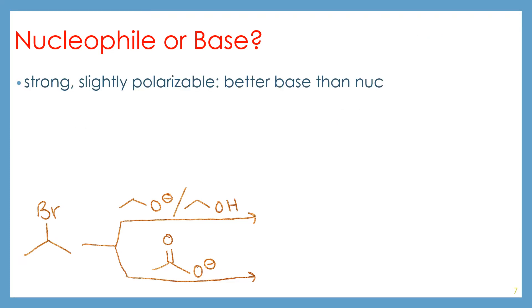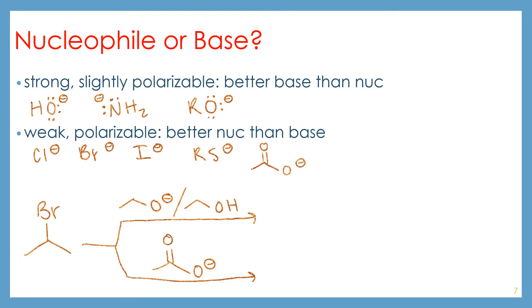So let's talk about the difference between nucleophiles and bases. If something is strong and slightly polarizable, it's going to be a better base than a nucleophile. So for example, hydroxide, azonide, or alkoxides. If it's weak and polarizable, it's going to act as a better nucleophile than base. So this includes your halogens, this includes alkyl thiolates, this also includes carboxylates.